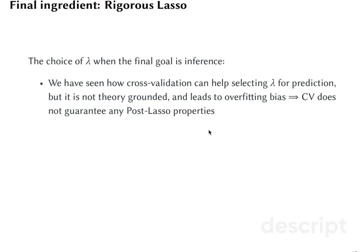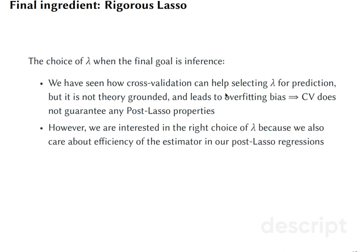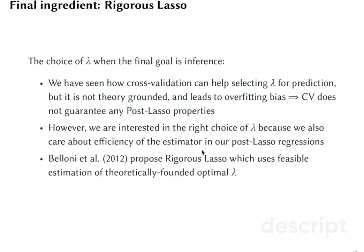The final ingredient which was very much important for the double selection procedure was the choice of lambda when the final goal is inference. We showed that cross-validation didn't do very well, but if we chose lambda using rigorous Lasso, it worked quite well.